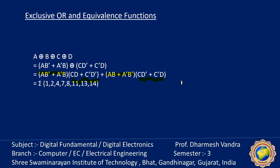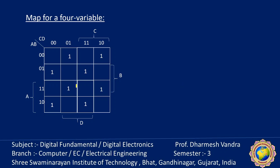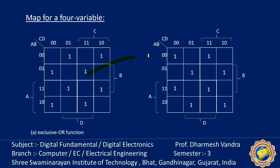Finally, we obtain the combination of min terms 1, 2, 4, 7, 8, 11, 13, and 14. This is the KMAP representation of the four-variable exclusive OR function. For the equivalence function, the map is in the opposite direction — the equivalence function covers the complementary min terms.